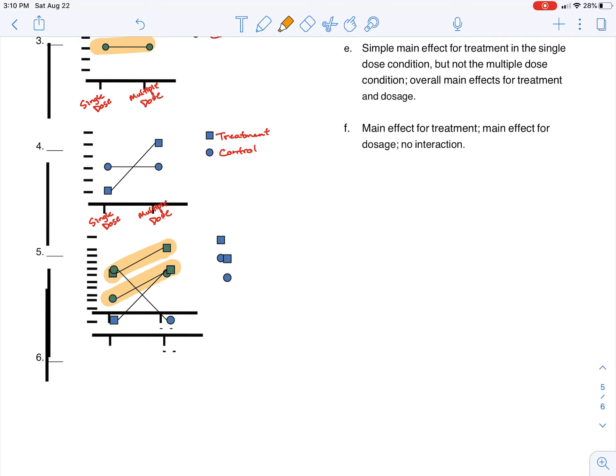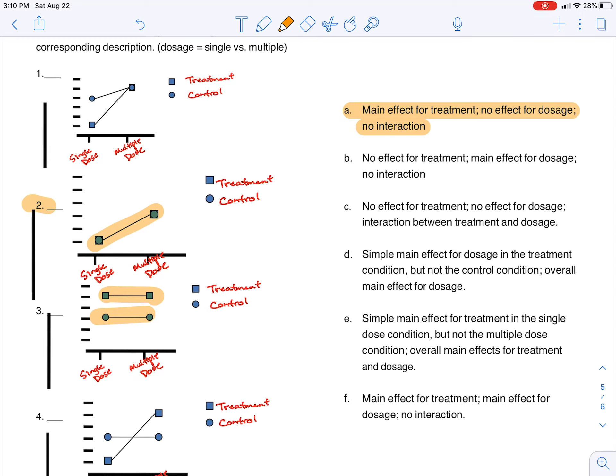So it could be either one of those three. We have parallel lines that go diagonally up. We have parallel lines that go diagonally up that are overlapping, number two. And we have parallel lines that go straight across. Okay, so all three of those have no interactions.